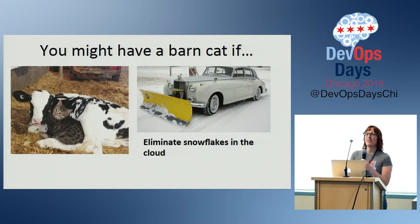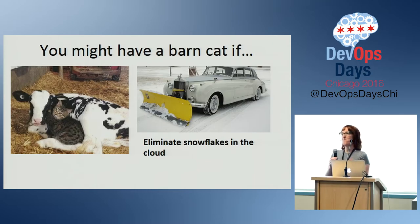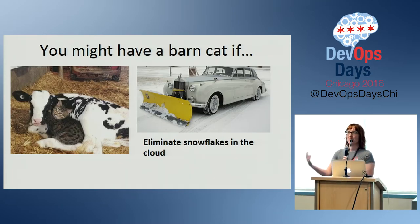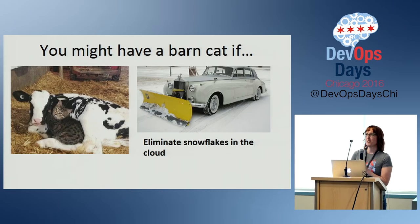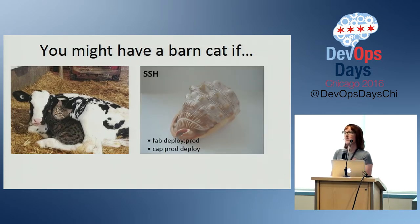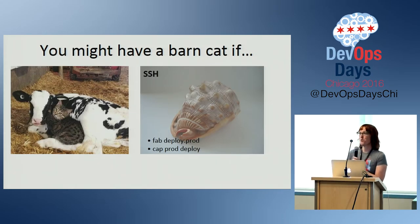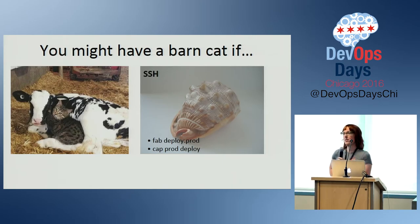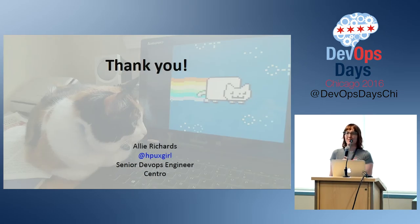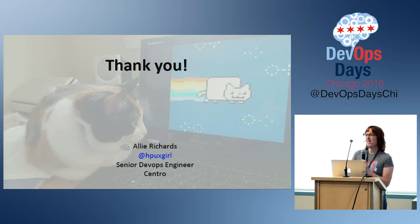To really push the cattle model forward, you have to realize that cattle are taken to market and slaughtered. That sounds grotesque, but it's true. If you are constantly killing off instances, you're making sure that you don't have drift. You can't always do this, but maybe in your configuration management you can do some explicit removes — you need to do this if you want to get to cattle.